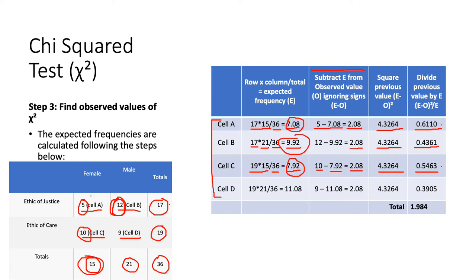Finally, cell D, we're looking again here. Total number for Ethic of Care times total number of males, which is 21, divided by 36, gives us 11.08. Minus 11.08 from our observed value of 9 here, which gives us, again, 2.08. Square it and then divide it by the expected frequency, 11.08. And it gives us 0.3905. And all we've done here is we've added all of these up together. So, this is our chi-squared value. This is our calculated value.